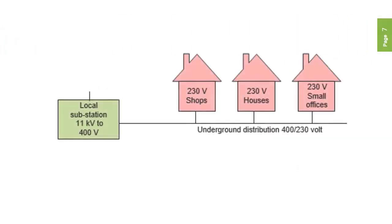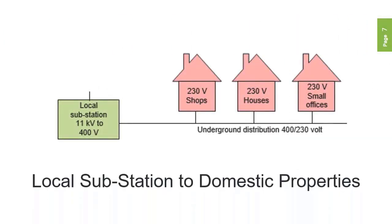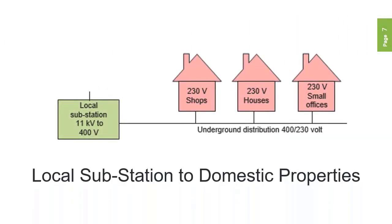Each line conductor can then also be used individually to produce a single-phase supply of 230 volts AC between the line and neutral conductor, to supply each domestic property along with an earth conductor.